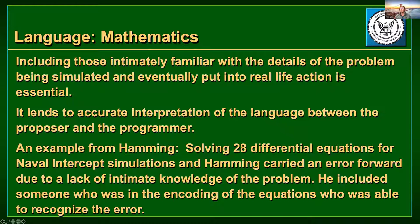The expert in the field had the interpretation that was ultimately the right one and was able to identify a problem with the actual encoding of those 28 differential equations. That was for Navy intercept simulations. Hamming's interpretation was carrying forward an error due to a lack of intimate knowledge of the problem — it was specific to a fin limitation with those missile sets.